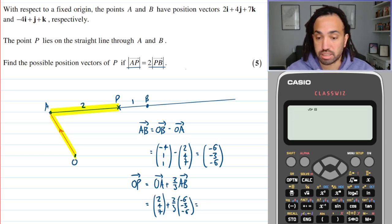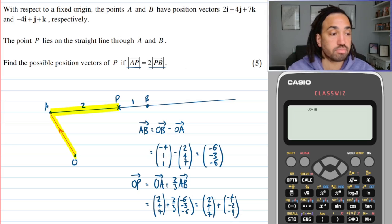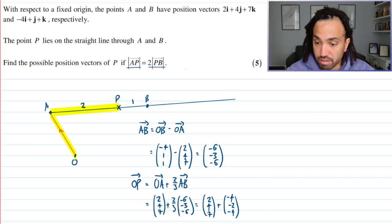So let me just do that calculation because two thirds of that will be minus 4, minus 2 and minus 4. We don't need to calculate it today. So therefore when I add these two together I will get minus 2, I will get 2 and I will get 3.